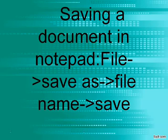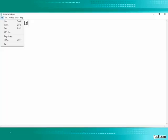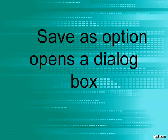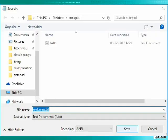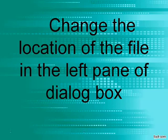Saving a document in Notepad: File, Save As, enter file name, Save. The Save As option opens a dialog box. Change the location of the file in the left pane of the dialog box.